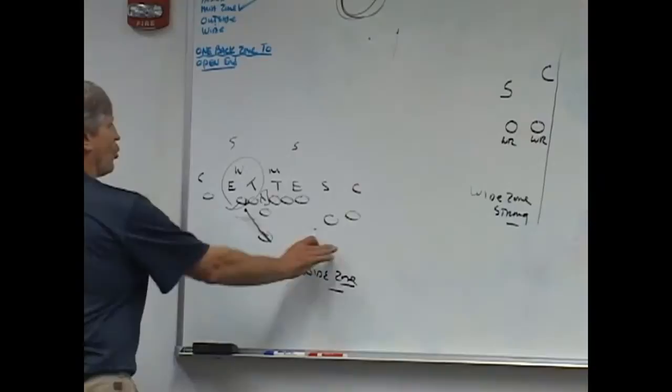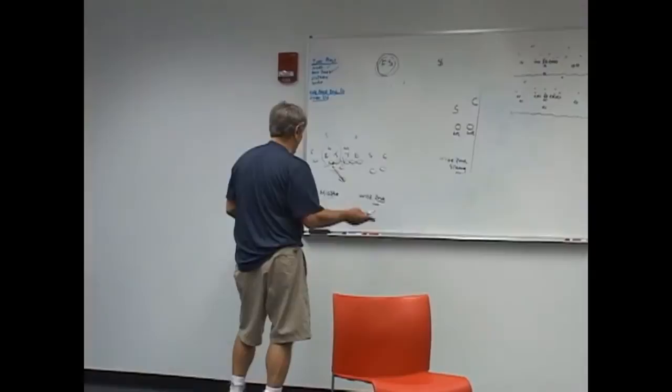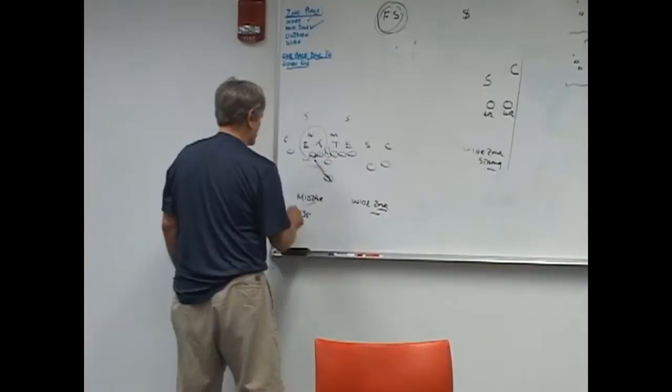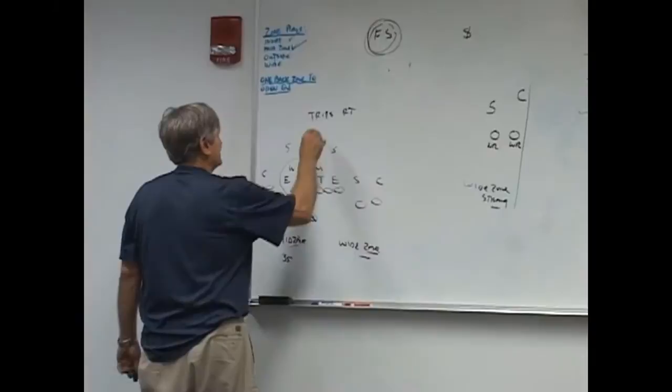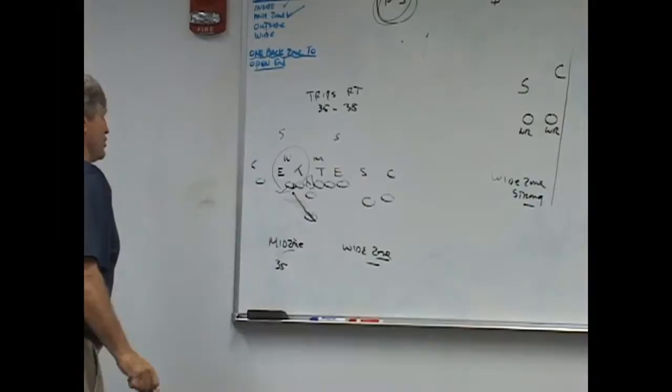Why are we going to go to wide zone over here? The quarterback in the huddle, he would say, we're going to package, check with me. Let's go 35. Let's say we called trips right, that means three guys to the right, trips right, 35 or 38.